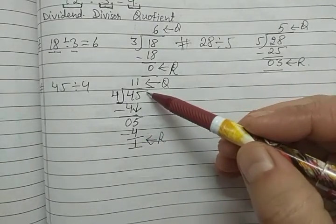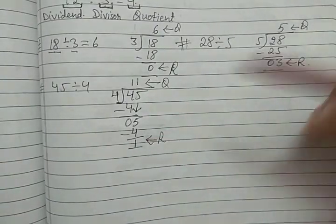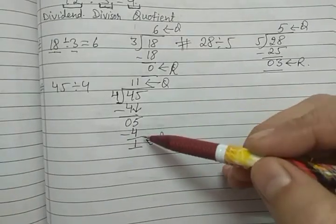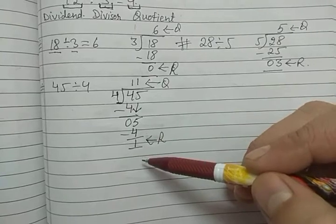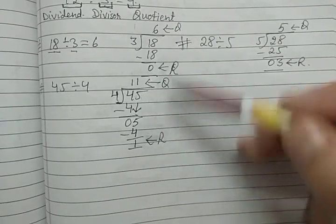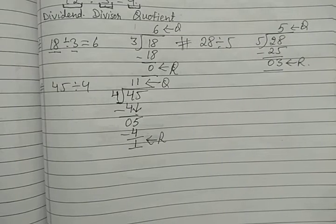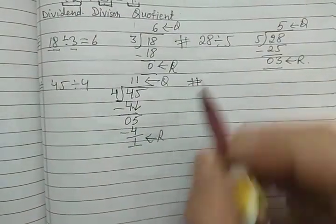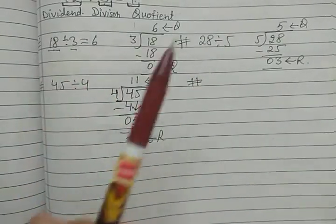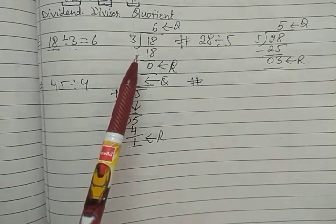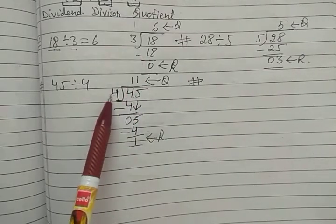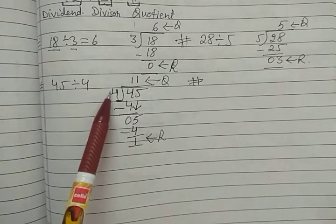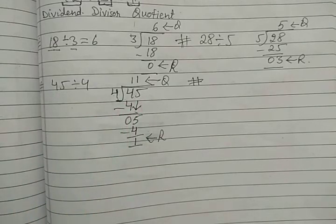If there were more digits, we would keep bringing them down and reciting the table until all digits have come down. In this way we can divide. So to summarize: check the first digit — if it is greater than or equal to the divisor, that's fine. If it is smaller than the divisor, we take two digits together to make it greater or equal. Like in the 28÷5 case, the first digit 2 was smaller than 5, so we took both digits together to get 28, which is greater than 5.